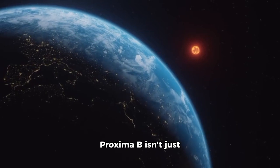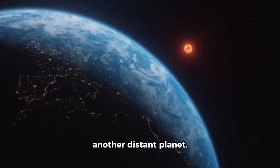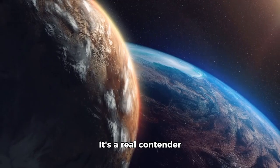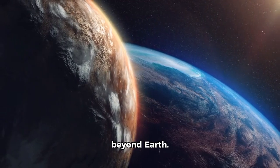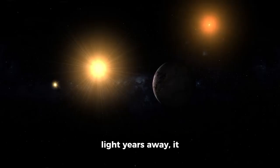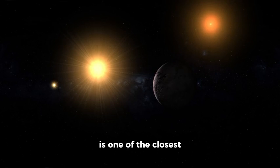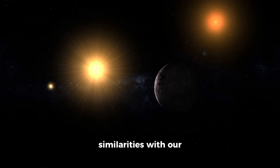Proxima B isn't just another distant planet, it's a real contender in the search for life beyond Earth. Located just over four light years away, it is one of the closest exoplanets to our solar system and shares some surprising similarities with our own planet.